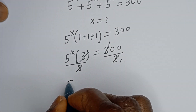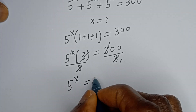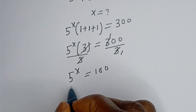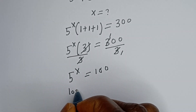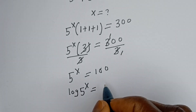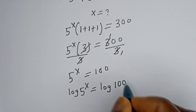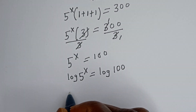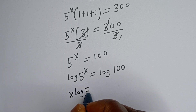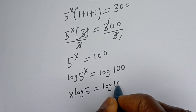Then we have 5 to the power of s is equal to 100. Now let's take the log of both sides: log of 5 to the power of s is equal to log 100. Then we have s times log 5 is equal to log 100.